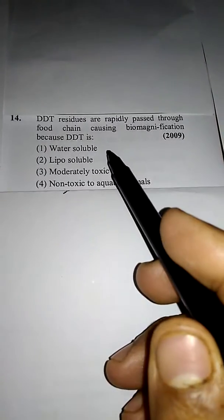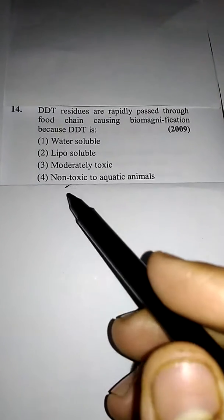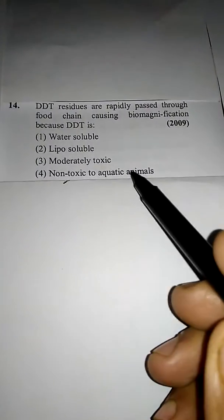But kyu hota hai? Khamarai saab ne 4 option hai: DDT water soluble hota hai, liposoluble hota hai, moderately toxic hota hai,